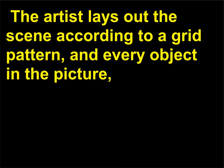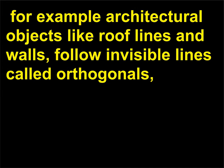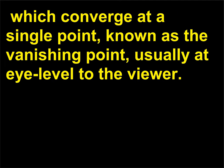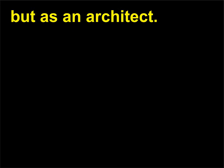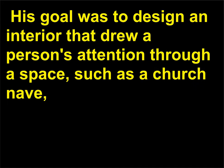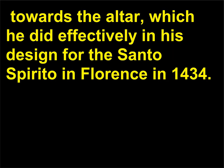The artist lays out the scene according to a grid pattern, and every object in the picture — for example, architectural objects like roof lines and walls — follows invisible lines called orthogonals, which converge at a single point known as the vanishing point, usually at eye level to the viewer. Strangely enough, Brunelleschi was primarily interested in perspective not as a painter but as an architect. His goal was to design an interior that drew a person's attention through a space, such as a church nave, towards the altar — which he did effectively in his design for Santo Spirito in Florence in 1434.